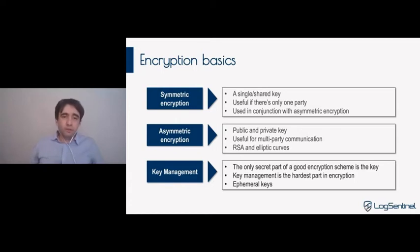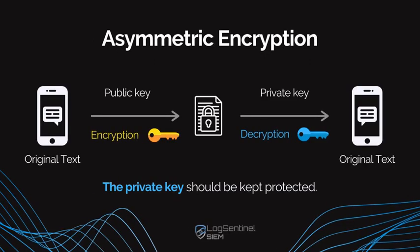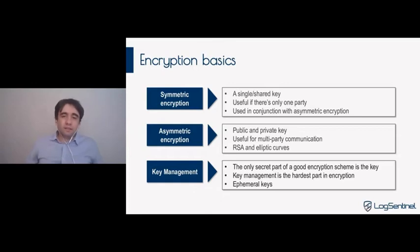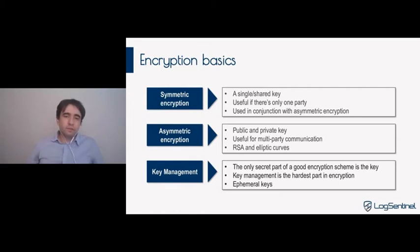Asymmetric encryption, on the other hand, includes a public and a private key. The private key should be kept really, really private, secret, and protected, whereas the public key is out there and can and should be used by the other side of the communication. It is very useful for multi-party communication — the obvious example is browsing a website, where you open a website, it presents its certificate, does some signing and encrypting of the session key. The popular algorithms are RSA and elliptic curves.